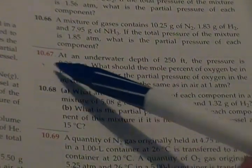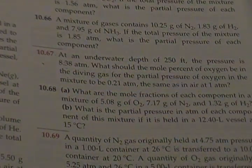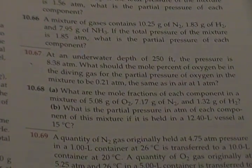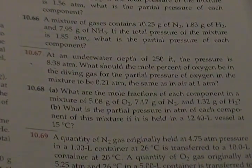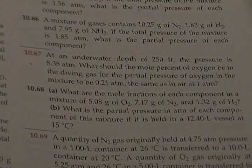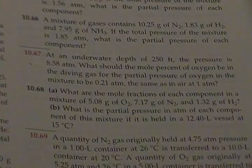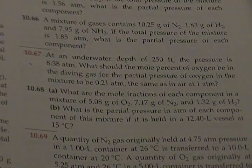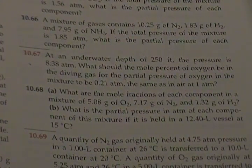Problem is number 67. At an underwater depth of 250 feet, the pressure is 8.38 atm. What should the mole percent of oxygen be in the diving gas for the partial pressure of oxygen in the mixture to be 0.21 atm, the same as in air at 1 atm?